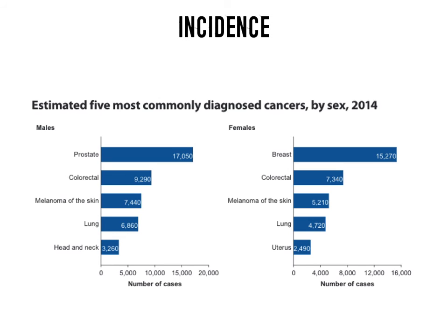Prostate cancer and breast cancer — being gender-specific cancers — have the highest incidence of commonly diagnosed cancers, and screening tools are available for both. Similarly, there is a screening tool for colorectal cancer, so the more people that get checked, the more cases will be found. For melanoma of the skin, many people are encouraged to check their skin regularly, which also raises incidence.